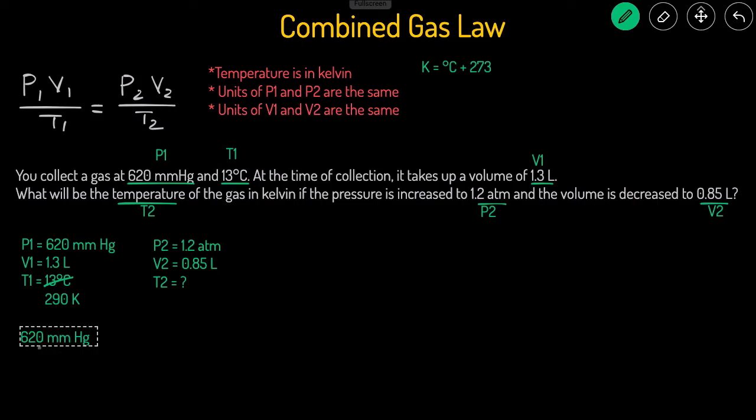So it takes 620 millimeters of mercury multiplied by 1 atm over 760 millimeters of mercury. And then that gives us 0.815 atm.